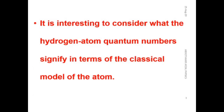Coming to the next slide. We shall consider what the hydrogen atom quantum numbers signify in terms of the classical model of the atom. We are going to correlate the quantum numbers acquired from the Schrödinger equation of the hydrogen atom to a classical system and understand the meaning of those quantum numbers.